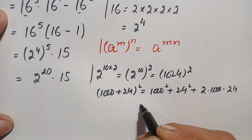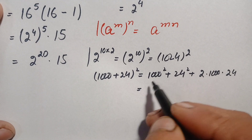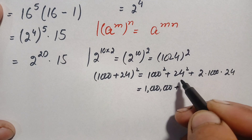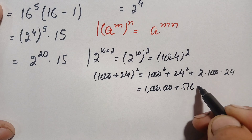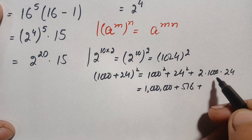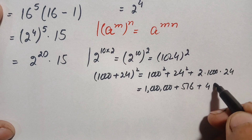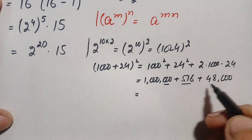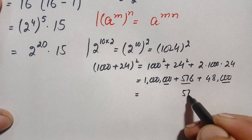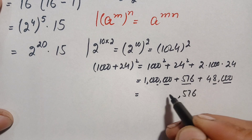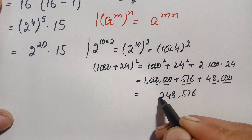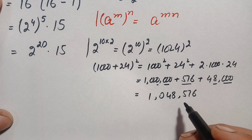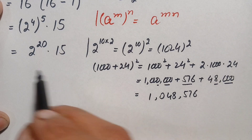Simplifying: 1000 squared is 1,000,000; 24 squared is 576; and 2 times 1000 times 24 is 48,000. Adding these three numbers — 1,000,000 + 576 + 48,000 — gives us 1,048,576. So the value of 2 to the power 20 is 1,048,576.